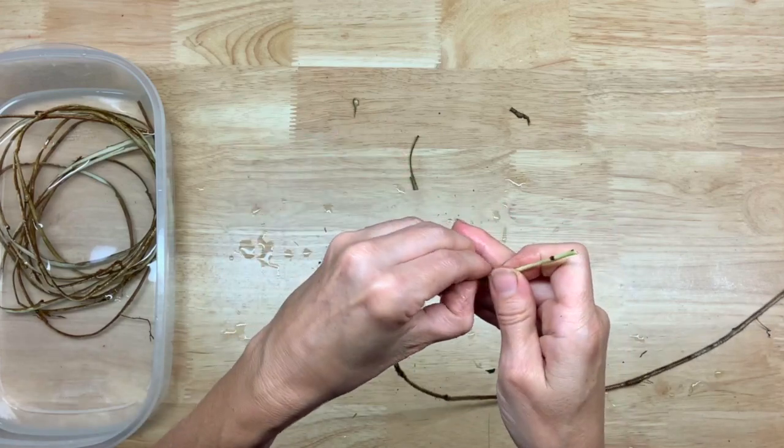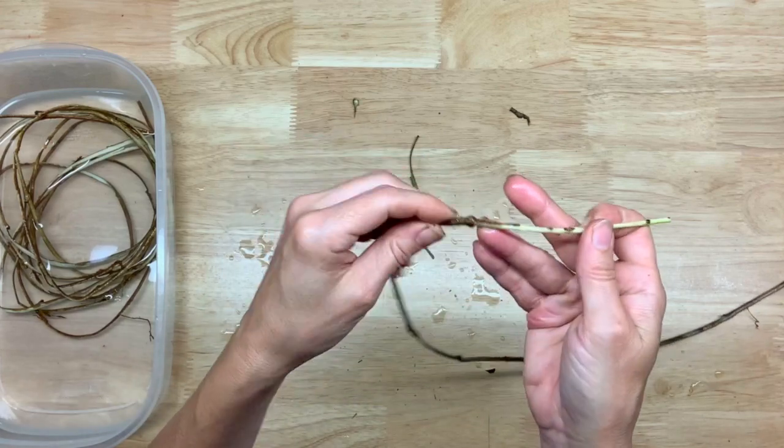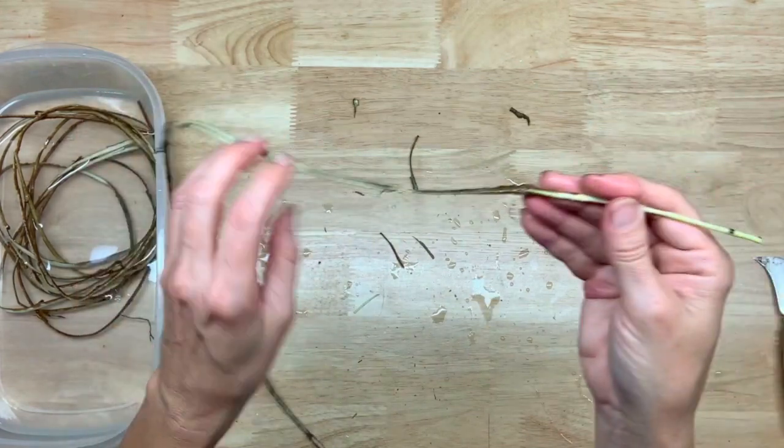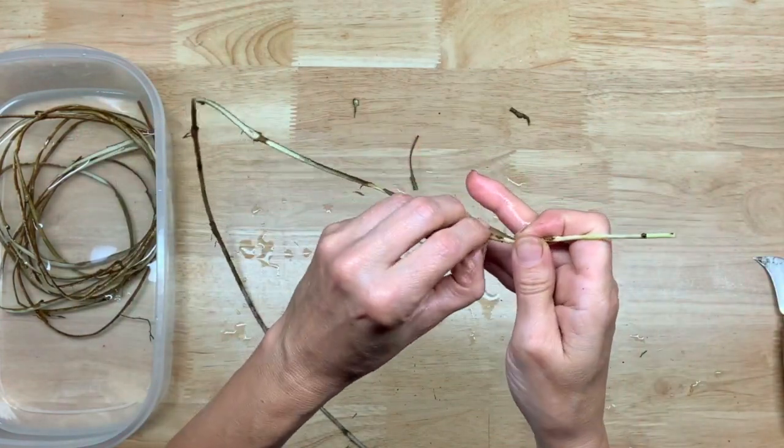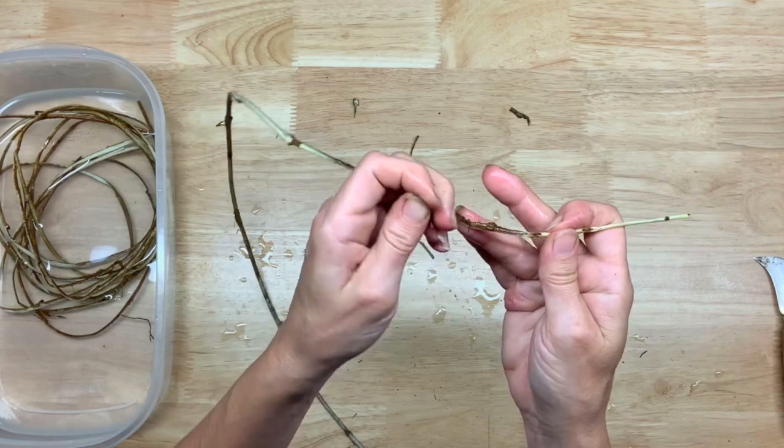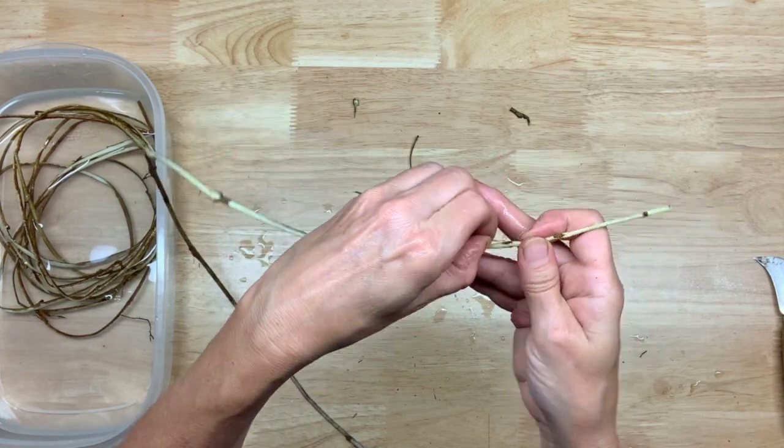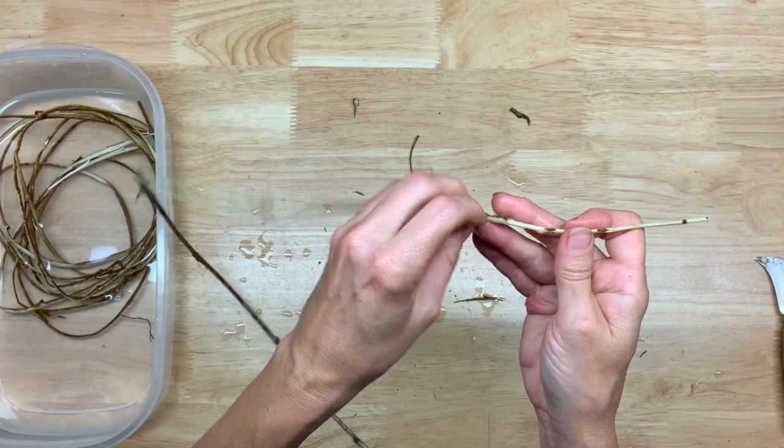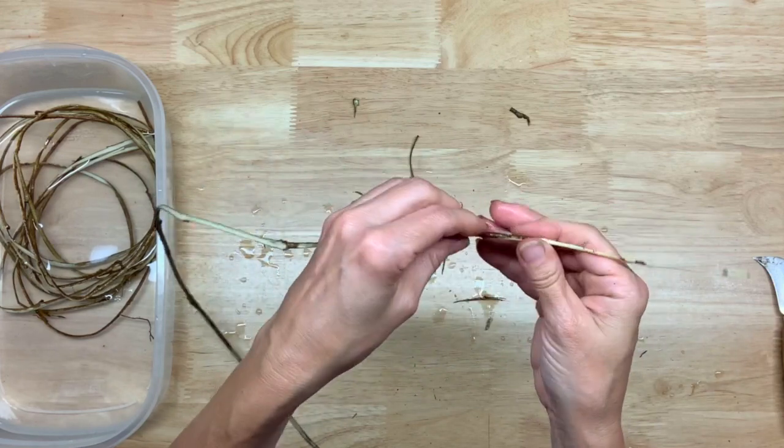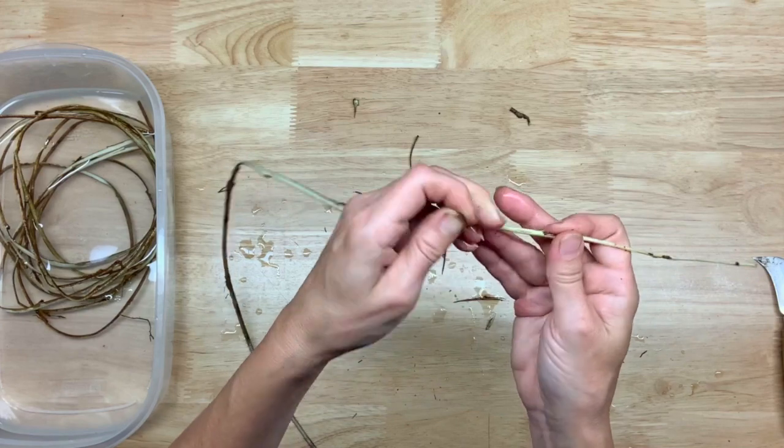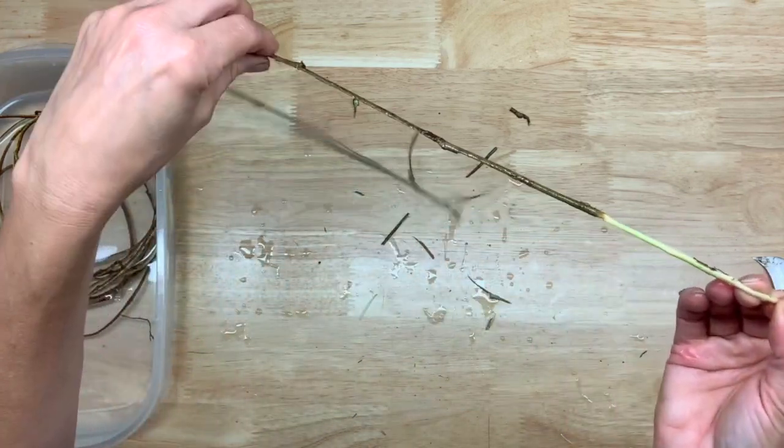I find that once the ivy sits all summer in hot, dry weather and hasn't been taking up water, it's harder to pull the bark off. You might have a different experience, especially if you're harvesting where it's hot and dry - you might want to try soaking it and maybe that'll work for you.